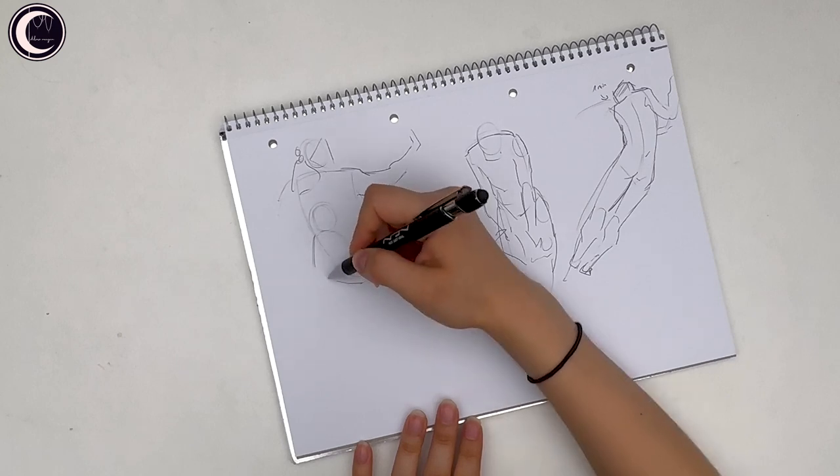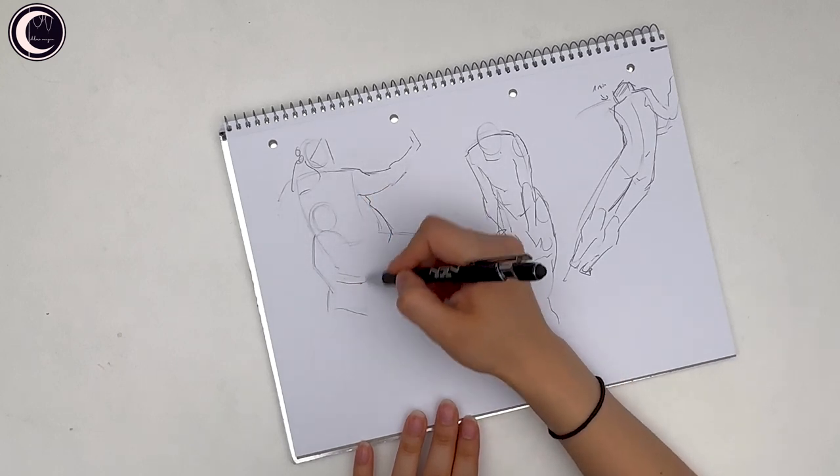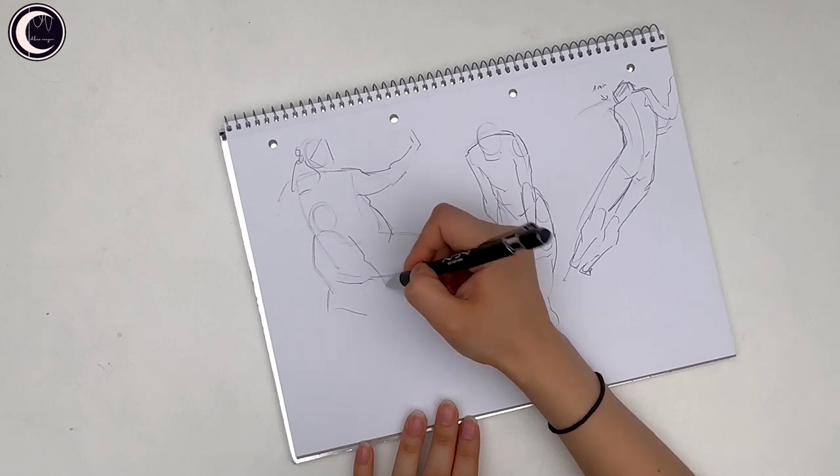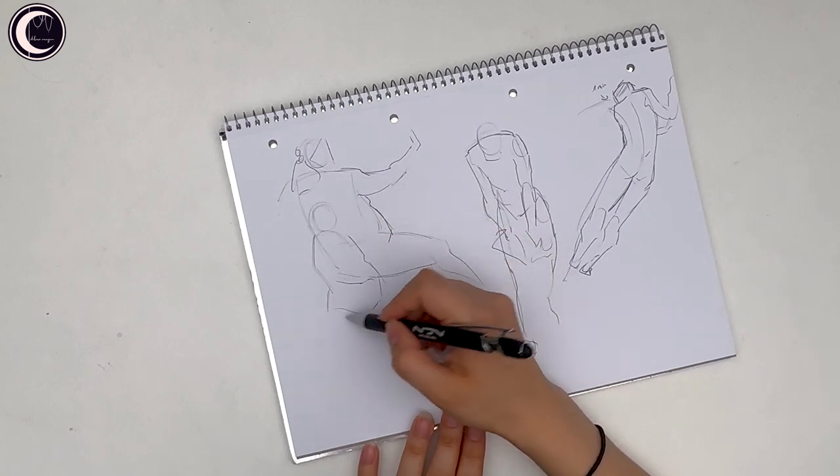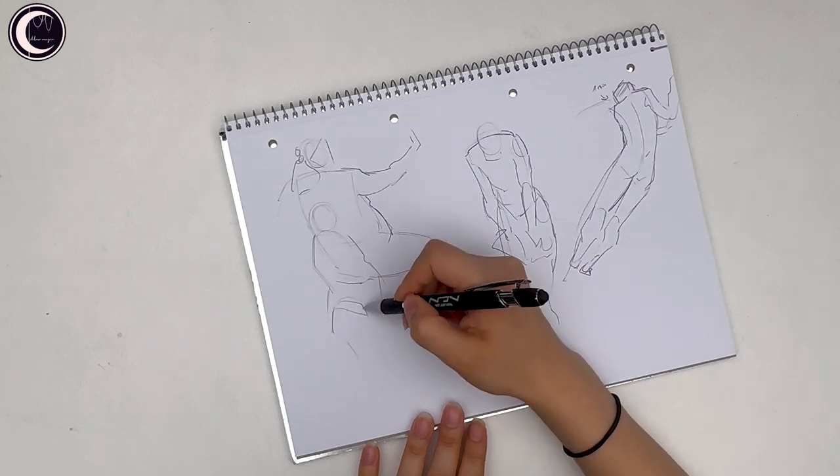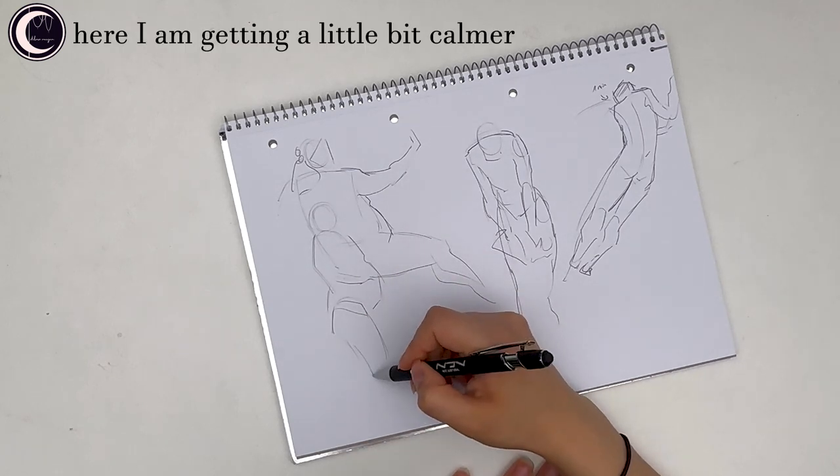And once I'm done with the 30 second poses it is time for a couple of one minute and then five minute poses. And usually the last pose will be 10 minutes but I don't like those so I will usually do either a couple of two to three minute poses because those are my favorite or two more five minute poses. It depends on what my mood is like.